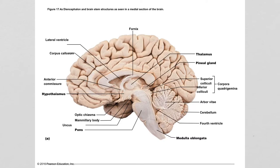We're going to look at the three thalamic regions. The hypothalamus is really important in its connection to the endocrine system. We also have the thalamus, and the epithalamus, which includes the pineal gland.